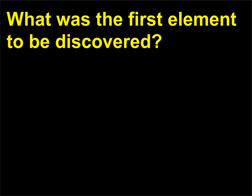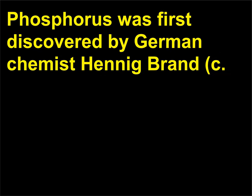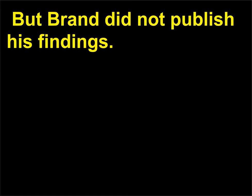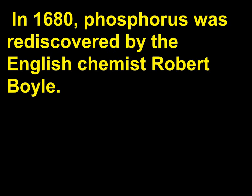What was the first element to be discovered? Phosphorus was first discovered by German chemist Hennig Brand (c.1630–c.1710) in 1669, when he extracted a waxy white substance from urine that glowed in the dark. But Brand did not publish his findings. In 1680, phosphorus was rediscovered by the English chemist Robert Boyle.